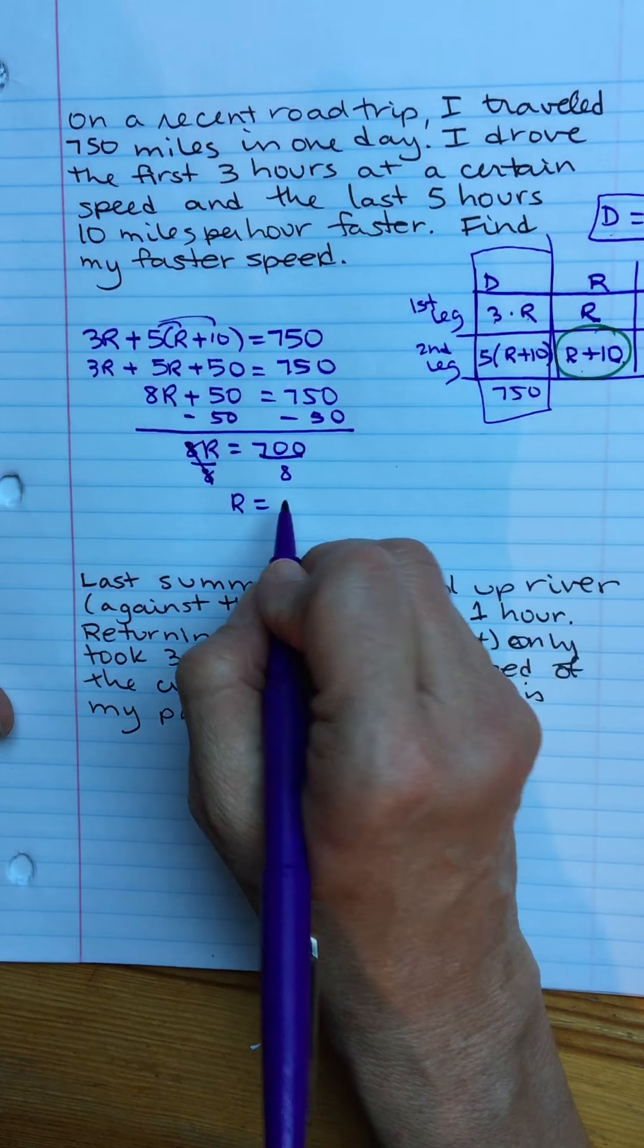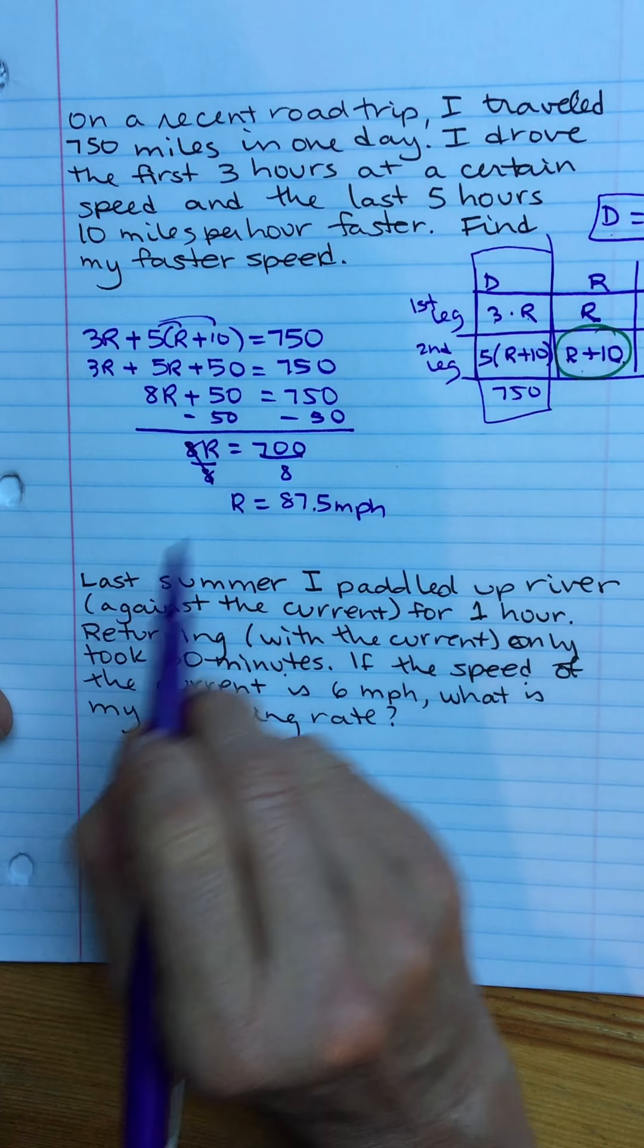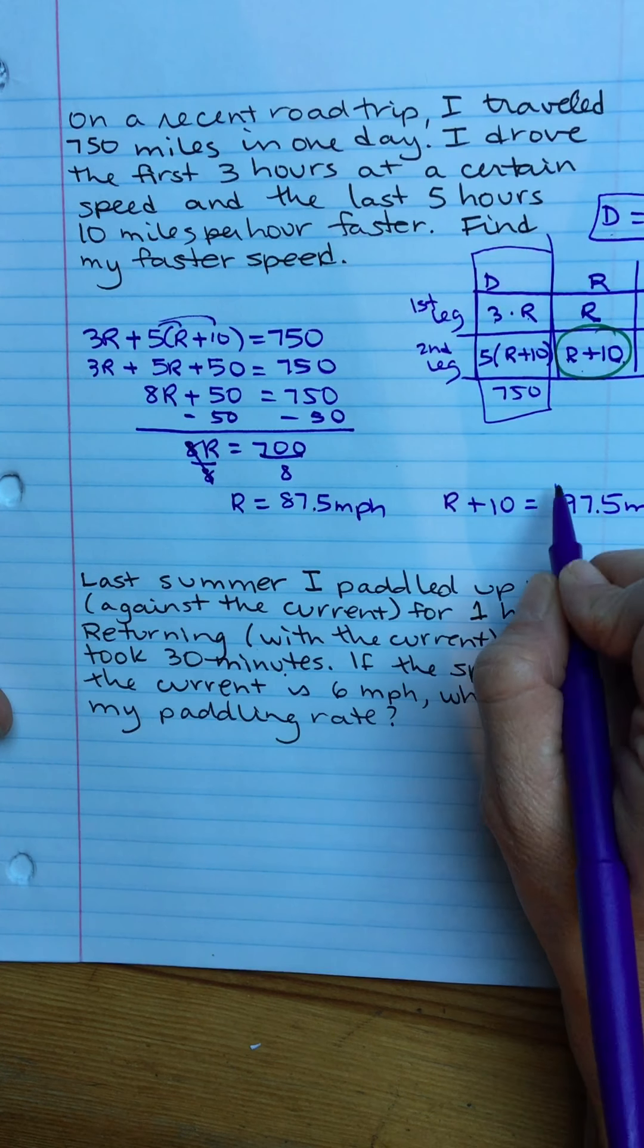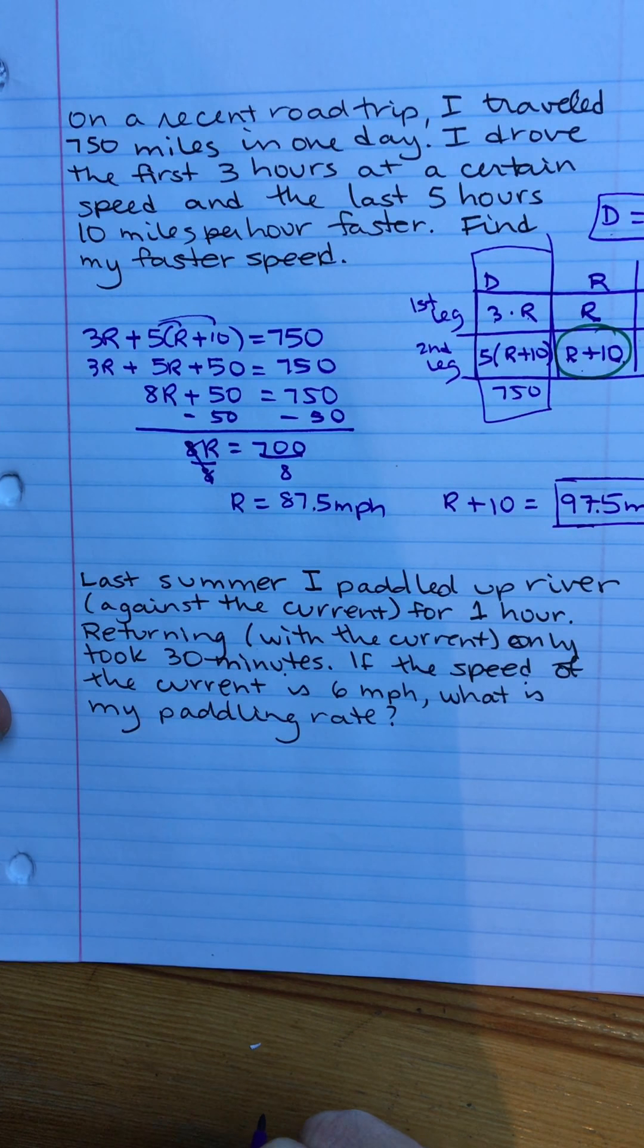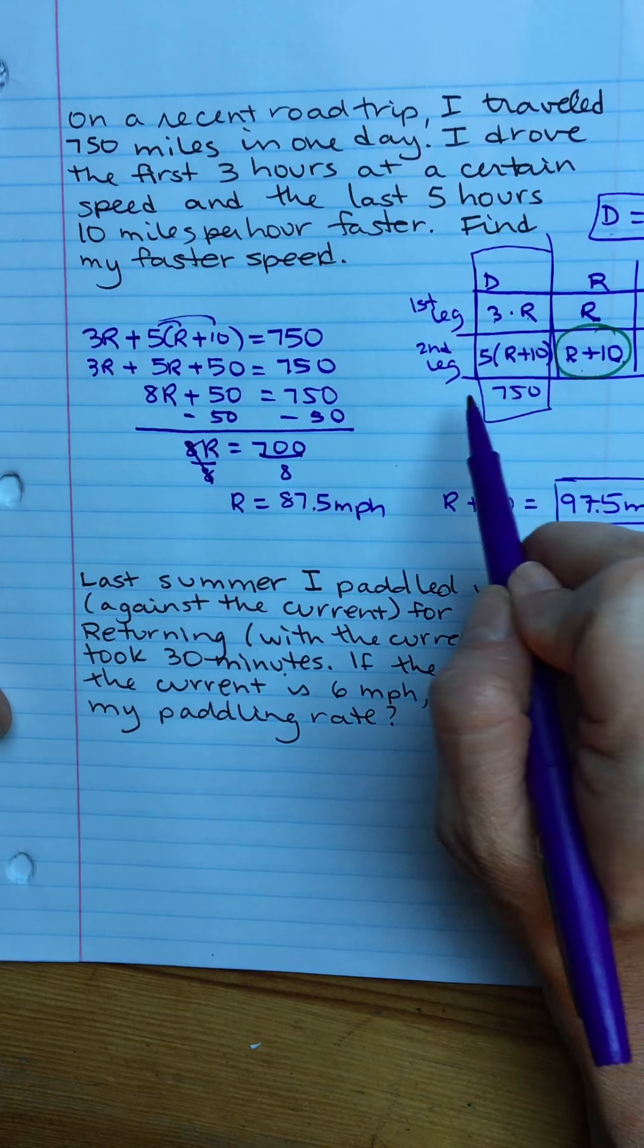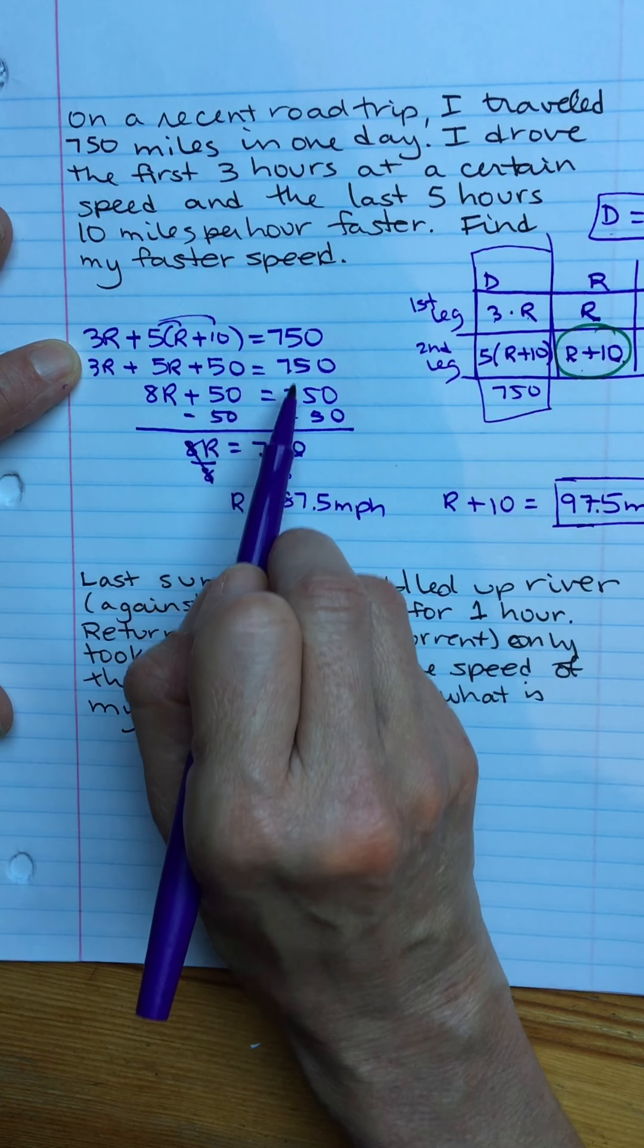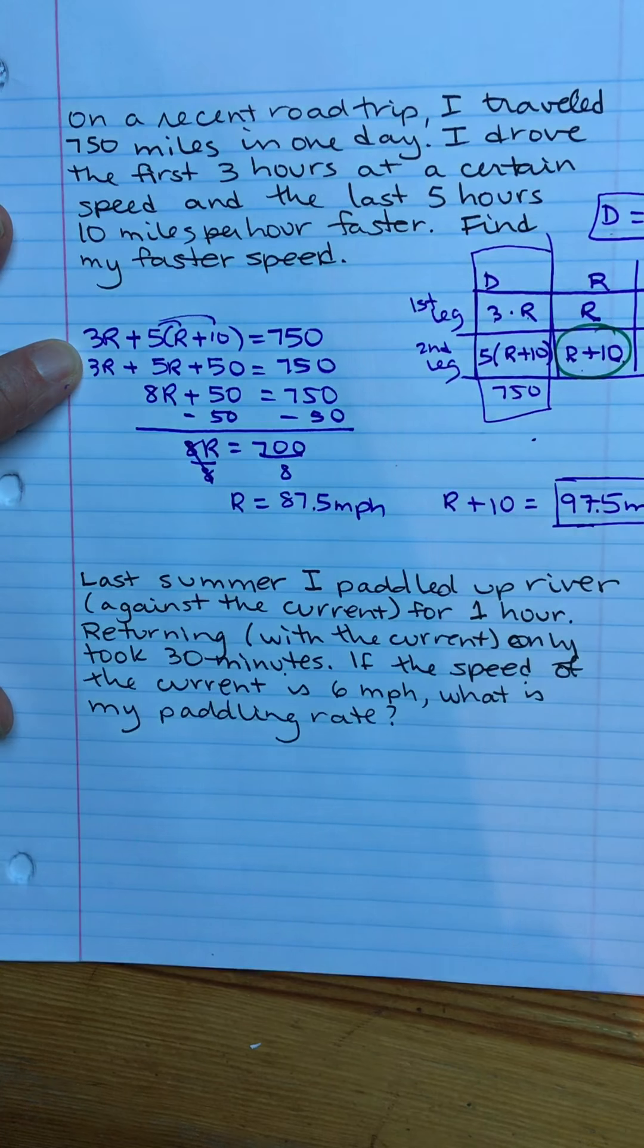Well, that sounds like I'm going way too fast. I was supposed to find my faster rate, so that would be R plus 10. So 97.5 miles per hour. I'm just going to check my math. 3R plus 5 times R plus 5 times 10. 8R, 50. Total trip was 750 miles. Subtract the 50. Divide by the 8. Okay, there we go.